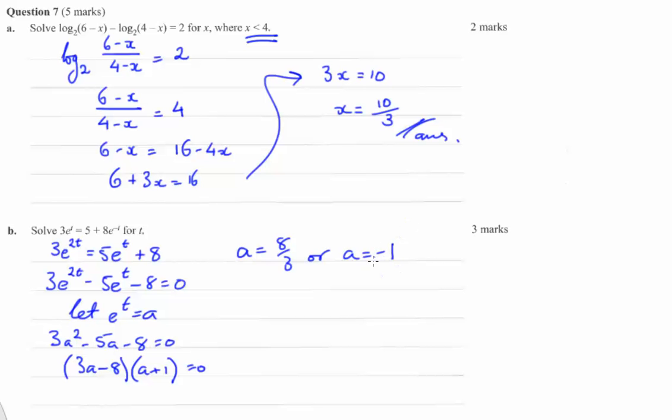Now this negative 1 doesn't work at all, does it? And that can't really do the trick because it's not going to work when we sub it in over here. So just reject that. Can't have the natural log of a negative.